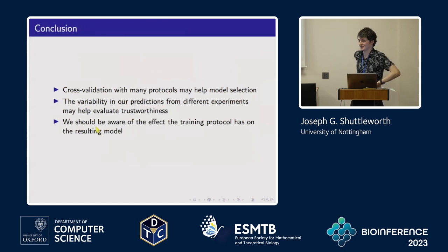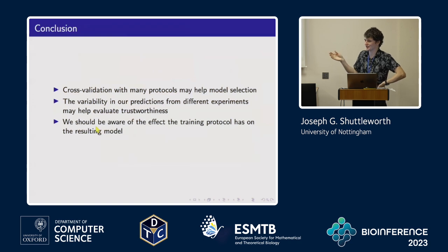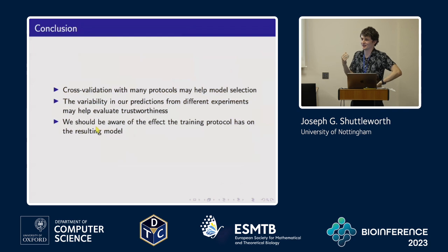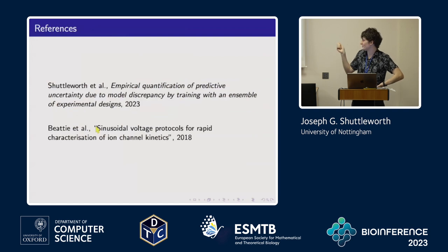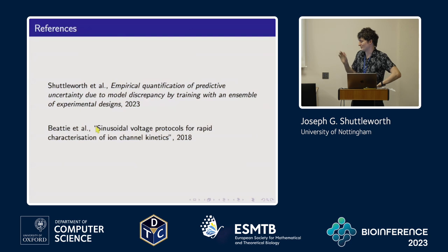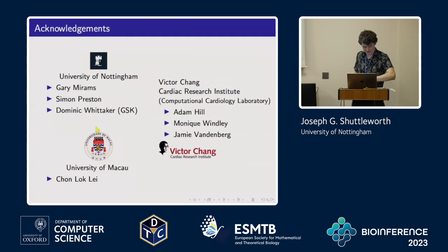We're hoping to use this cross-validation with other protocols to select the most useful model from a much greater number of candidate models than shown here. We think the variability in predictions is a good way to get a handle on how much model discrepancy there is in a meaningful way that relates to what we're actually using the models for. We should also be aware of where we've got the parameters from when there's model discrepancy, because depending on the use case those parameters might not be the best choice. The synthetic data work is in a preprint, and the second reference is a good primer on this modelling problem.